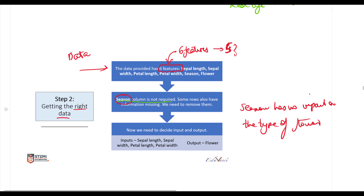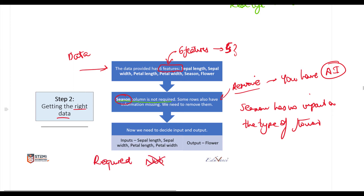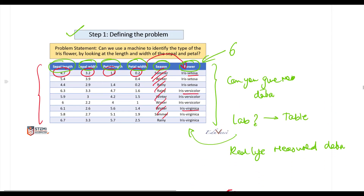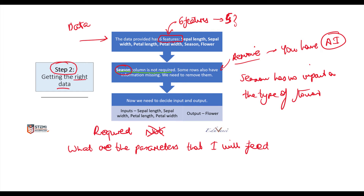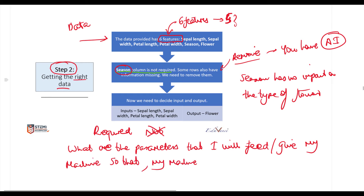Step number two is not just about getting the data — it's also about getting the right data. Since the season column is not required, we remove it. This is a decision you have to make as someone who knows AI: which data is required and which is not. We will ignore the season column and work with the remaining five columns.